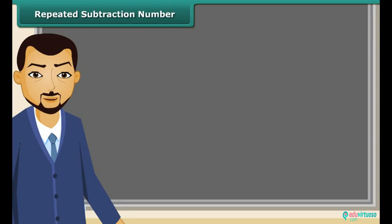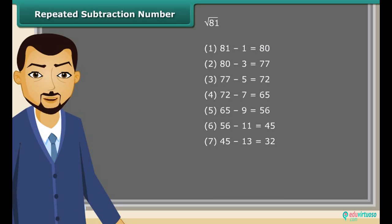We can find the square root of a given number using repeated subtraction method. It is really easy. Consider the square root of 81. Just subtract successive odd numbers from 81 starting from 1 till the difference becomes 0. So you have noticed it took 9 steps to get the difference as 0. Therefore the square root of 81 is 9.